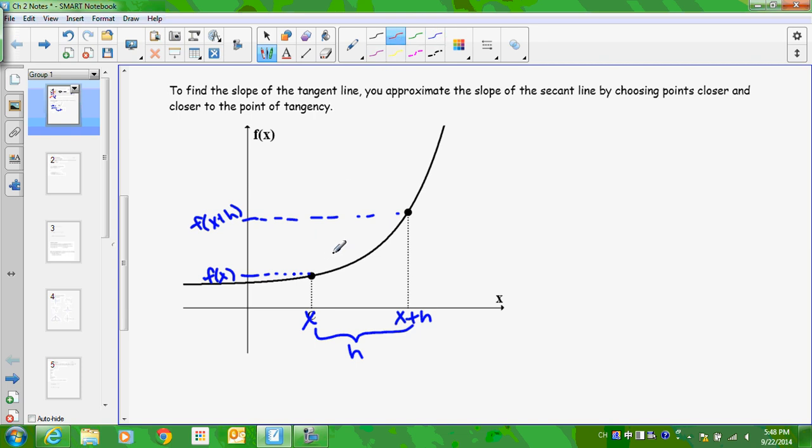Okay, so if I wanted to find the slope between these two points, that would actually be a secant line. And so this would be the average rate of change. We call this AROC. This would be a secant line. Notice that there are two points.